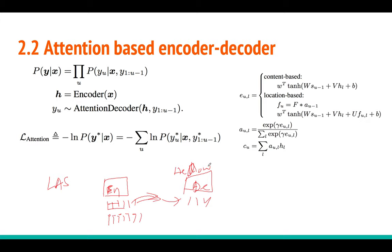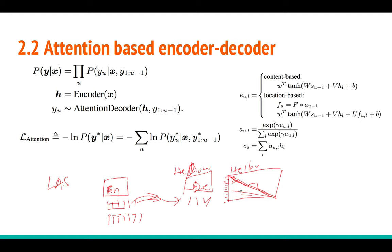You get the weighted average of those input hidden vectors — called the context vector — and use it as input to the prediction at time t. That way the system finds alignment between the input audio features and the predicted character sequence 'hello'. If everything is working well, the attention should look roughly linear. But the problem is this attention may not work well in noisy conditions or with long input sequences, so to address that they use multi-task learning.